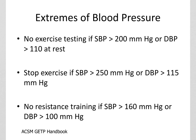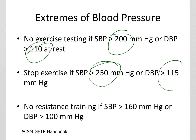Understanding the extremes of blood pressure is important — knowing when not to work with somebody. Students often think that if someone is at 150 over 100, that's too high to work with. Actually, you can exercise with these individuals; you need to monitor them more carefully, look at their responses, and encourage them to seek treatment. We can have pretty high blood pressure and still safely work with these patients.